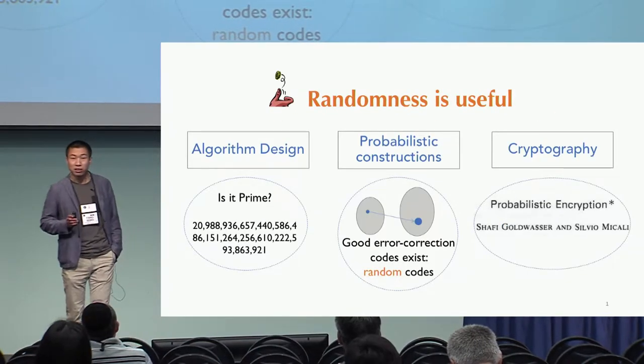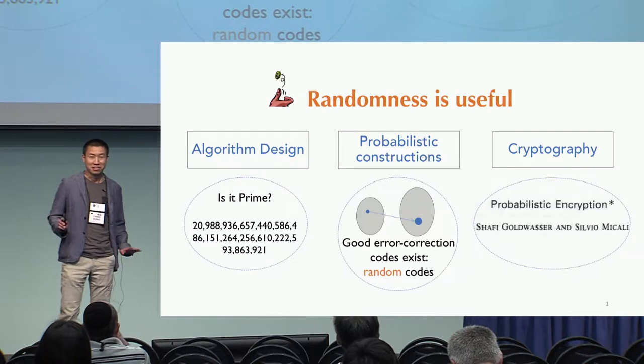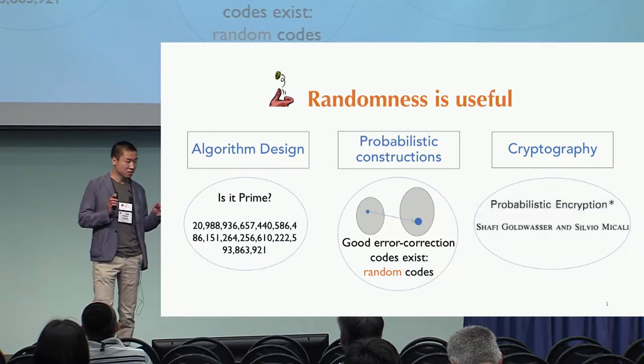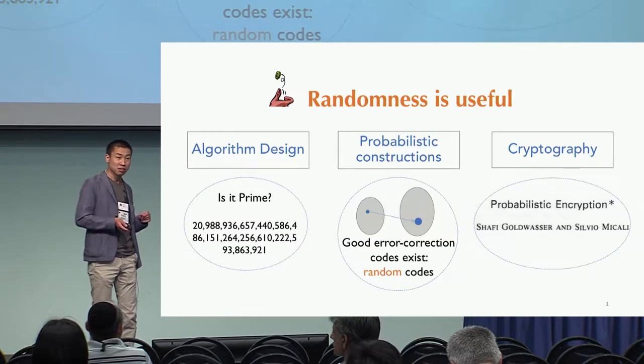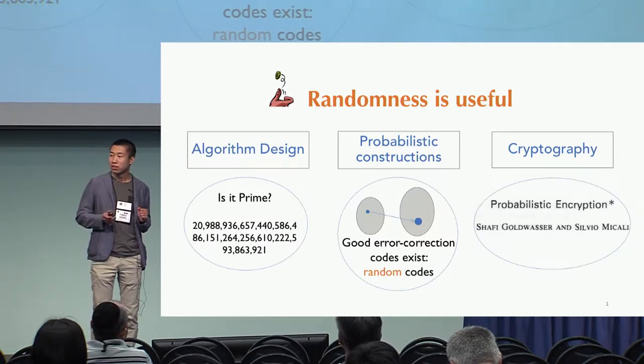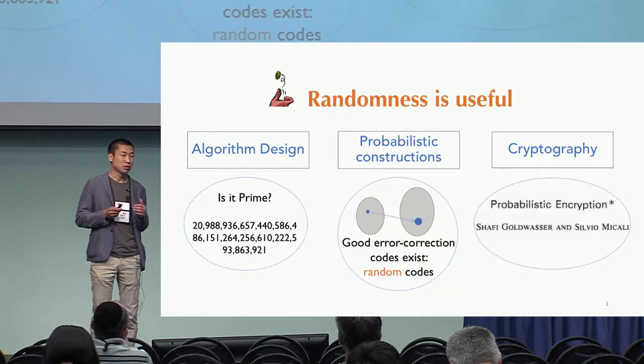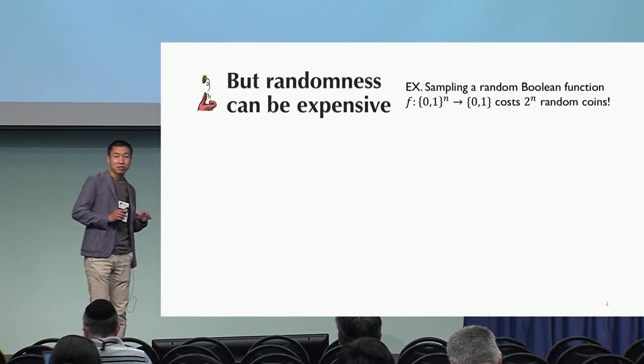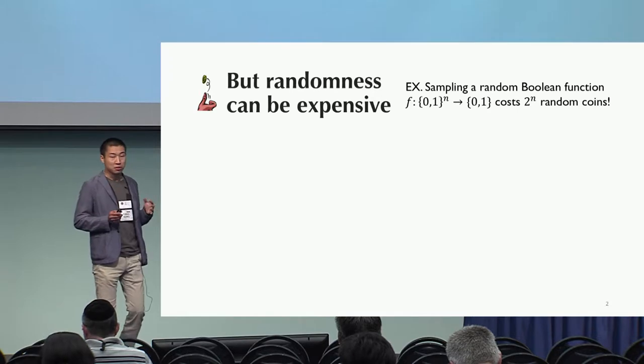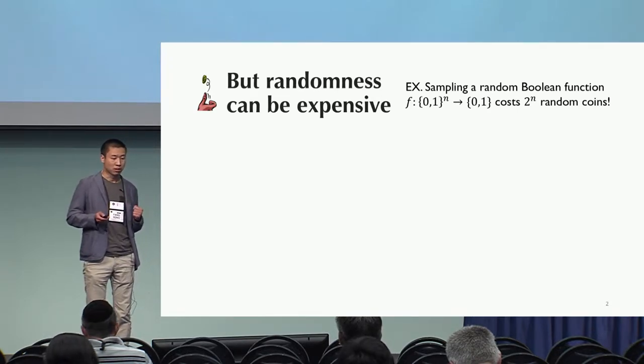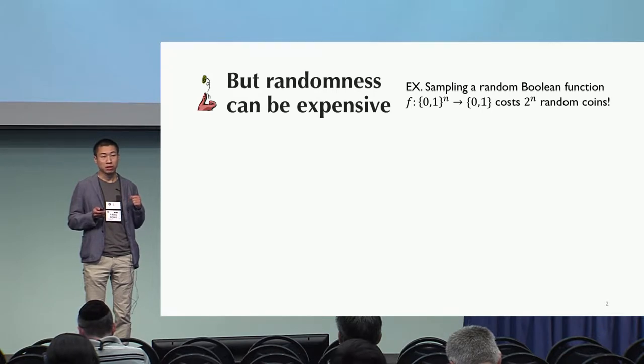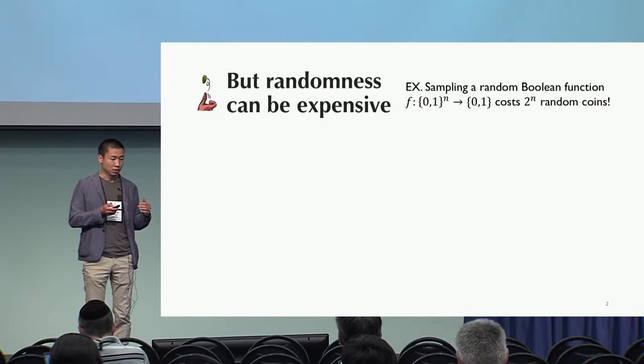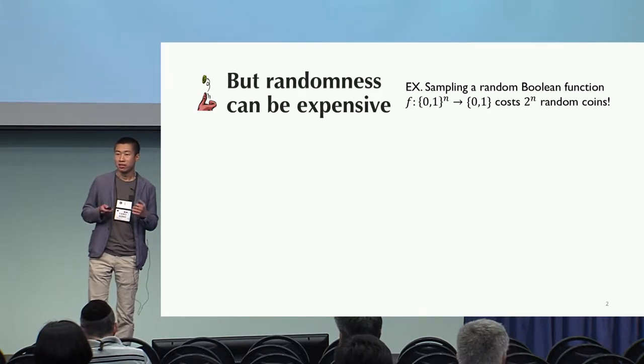Let me start off by claiming that randomness is useful. I believe you already have tons of examples flying in your head supporting this claim, like all the nice randomized algorithms, probabilistic constructions of nice combinatorial objects, and of course everywhere in cryptography. But everything comes at a cost. True randomness may be expensive to come by. For example, if I'm going to sample a random boolean function such that every n-bit input gets assigned one bit random output independently, then we're going to need 2^n fair random coins. And that's an exponentially large number.